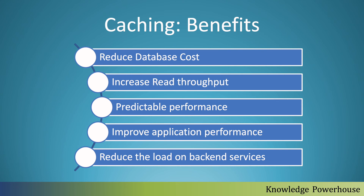Another benefit is predictable performance. In cache, if you store things like a hash map, it operates in constant order, so search happens very fast and overall system performance increases. We have personally found that Memcached and Redis cache significantly increases the performance of the system for queries.